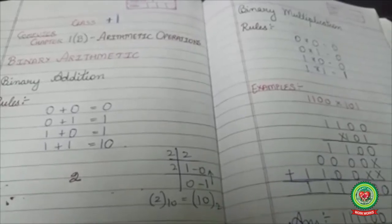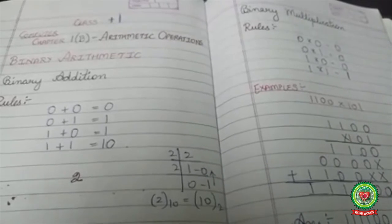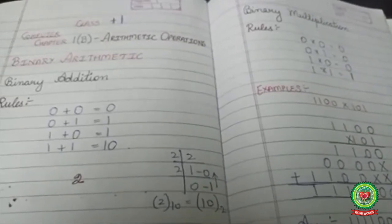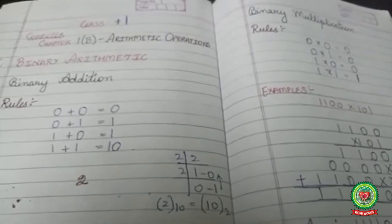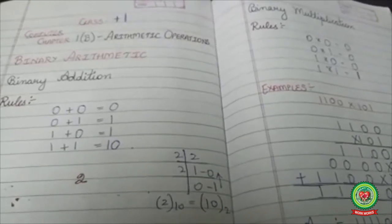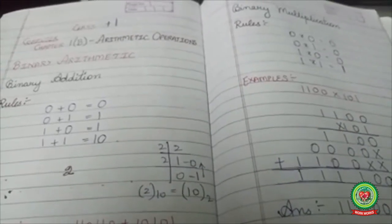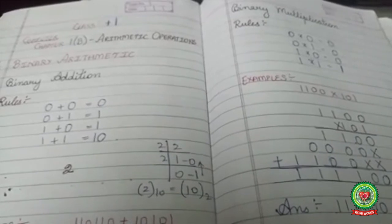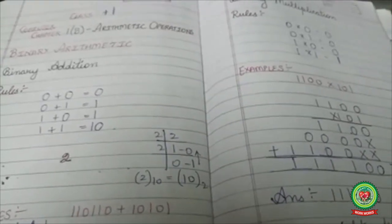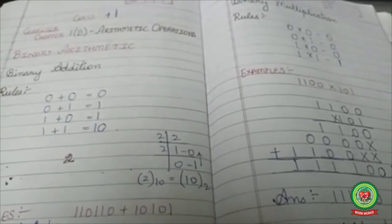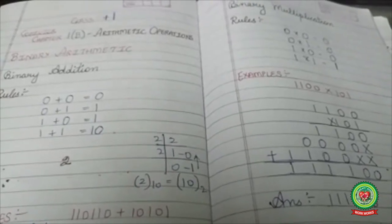So today you have learned binary addition and binary multiplication. Do practice the examples of these sums from your book on page 62 and pages 34 to 36. We will continue with the next arithmetic operation, binary subtraction, in the next session. Thank you.